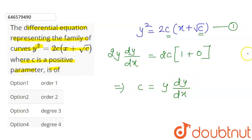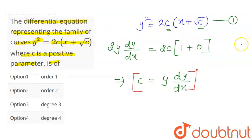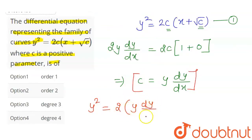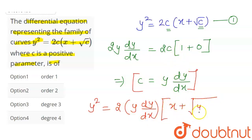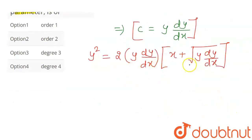We substitute this value of c into equation 1, so c gets eliminated. Equation 1 becomes: y² = 2·(y dy/dx)·(x + √(y dy/dx)). This gives us the differential equation, but from this form we cannot determine the degree yet.